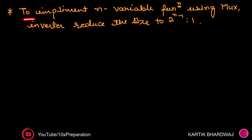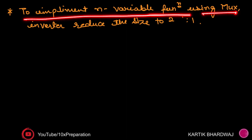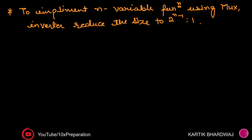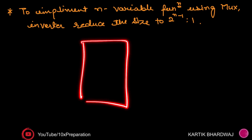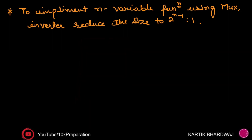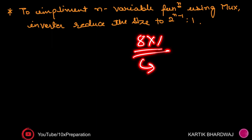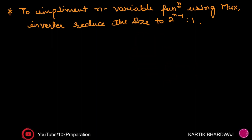The key statement is: to implement an N-variable function using a MUX with an inverter, you can reduce the size of the MUX by one variable — from a 2^N × 1 MUX down to a 2^(N-1) × 1 MUX. So if you have an 8×1 MUX and one inverter is given, you are capable of implementing the same function using a 4×1 MUX. This is the MUX size reduction technique.